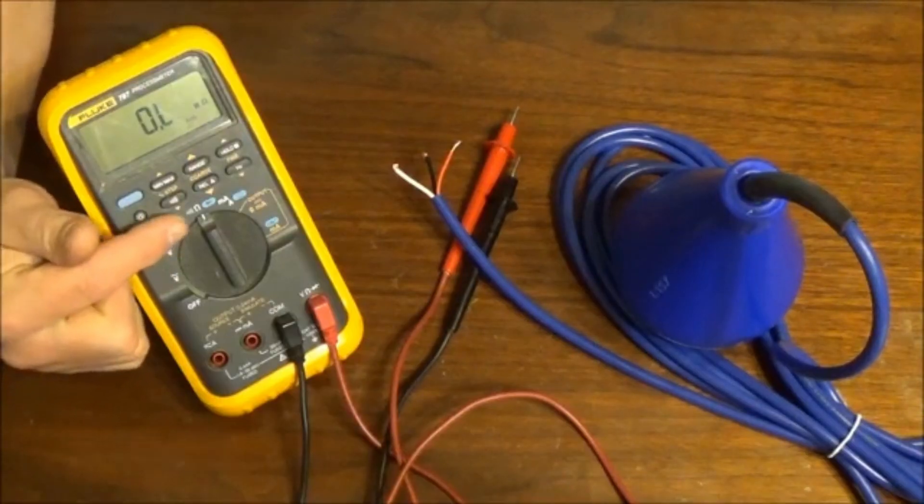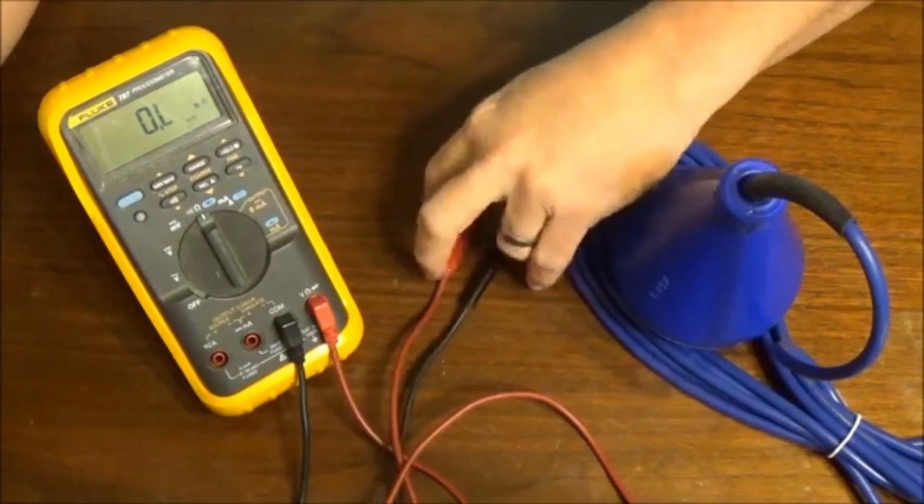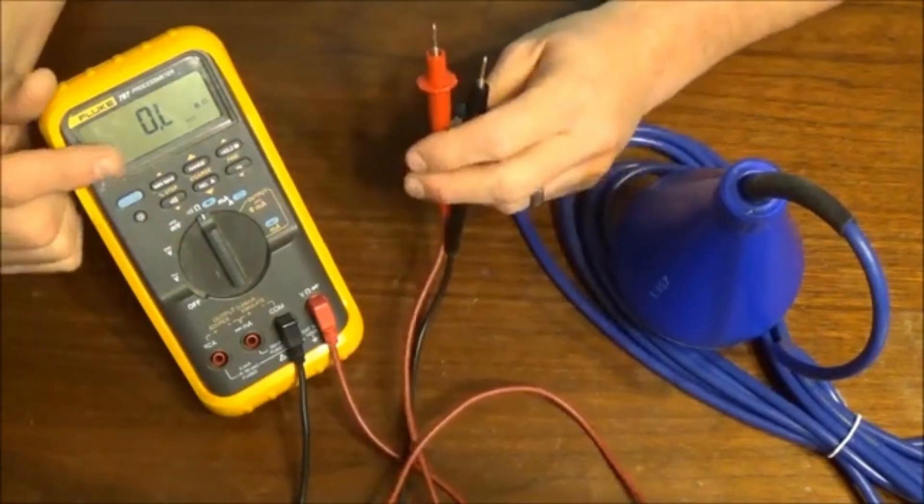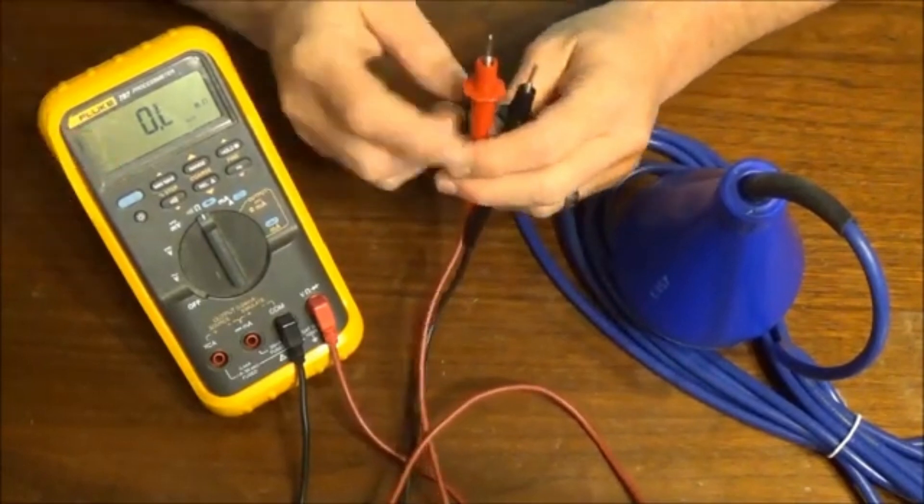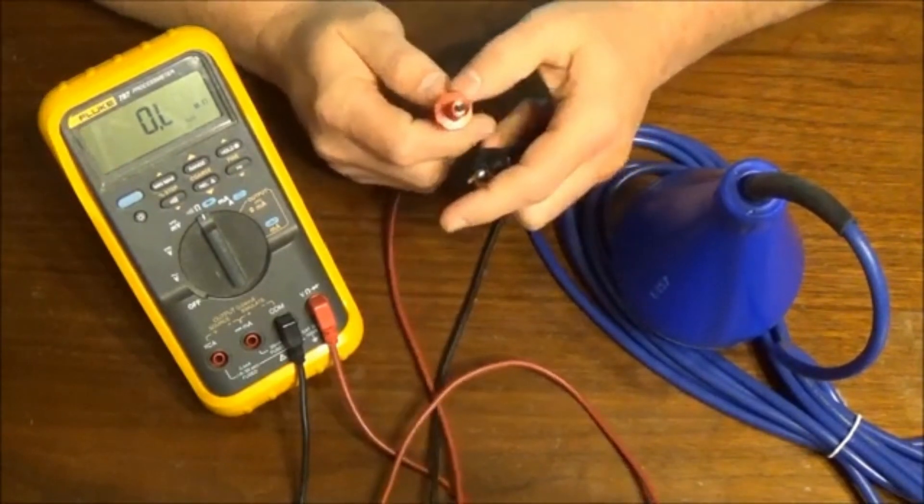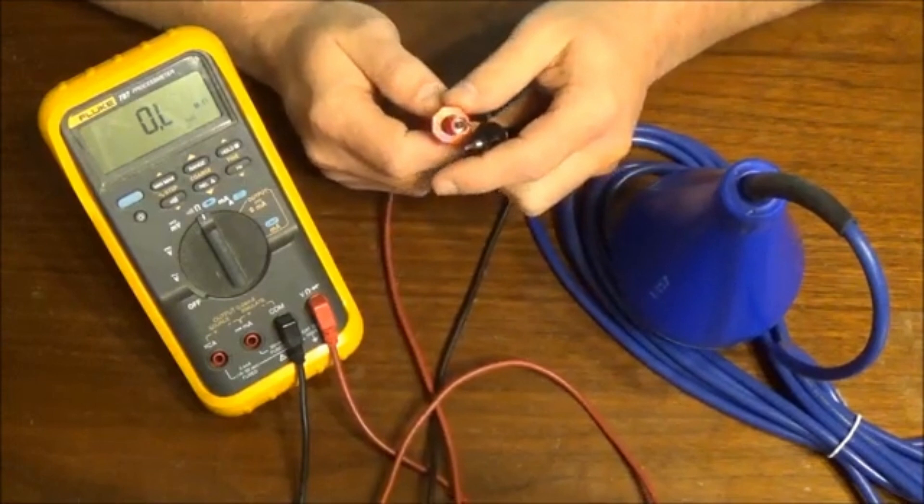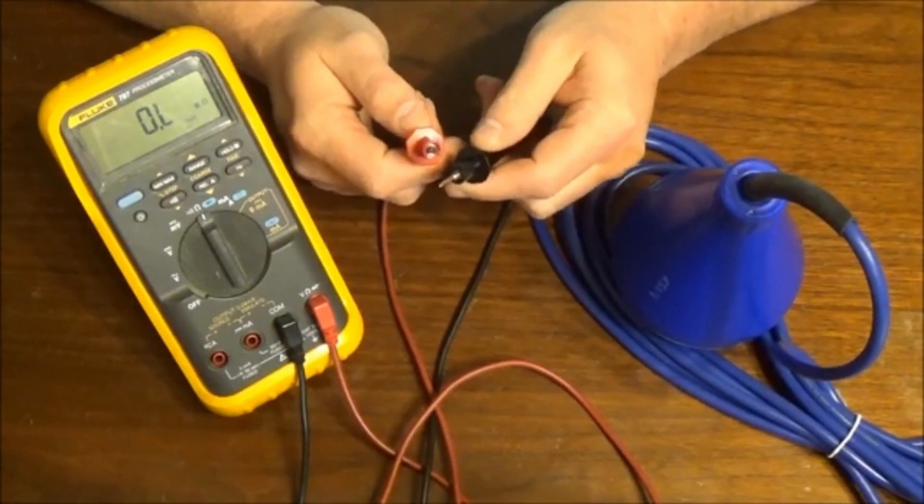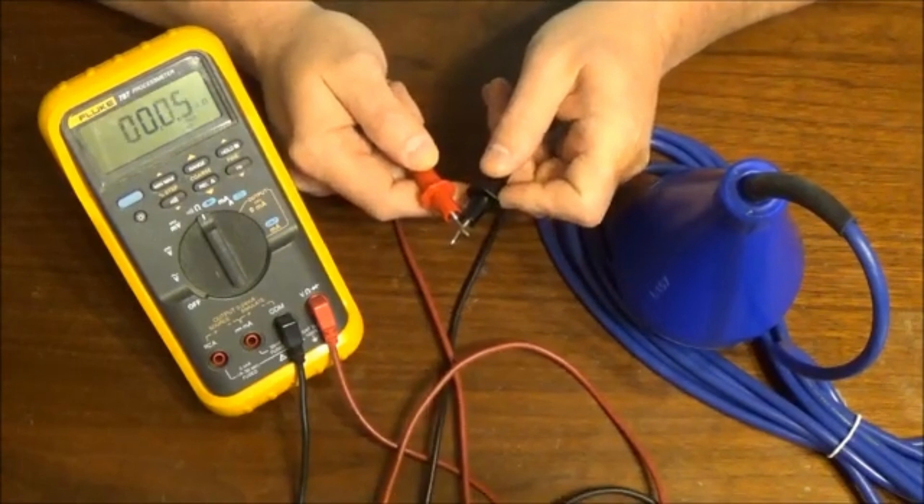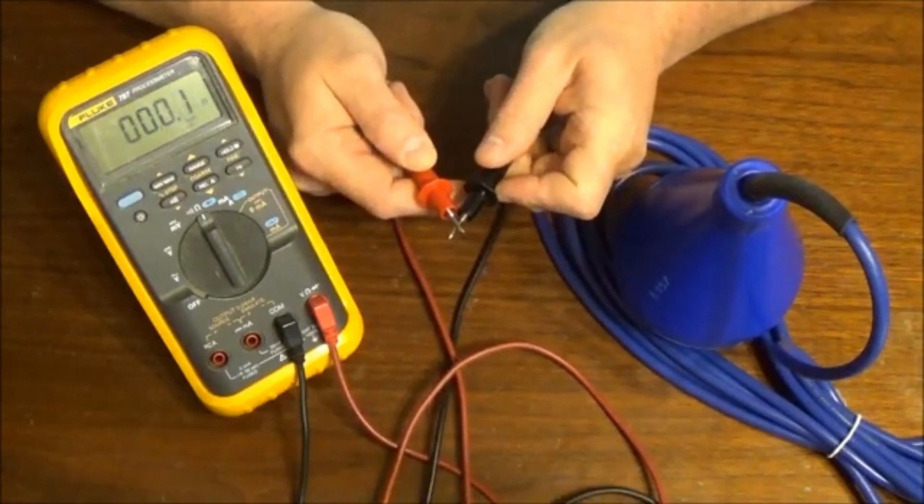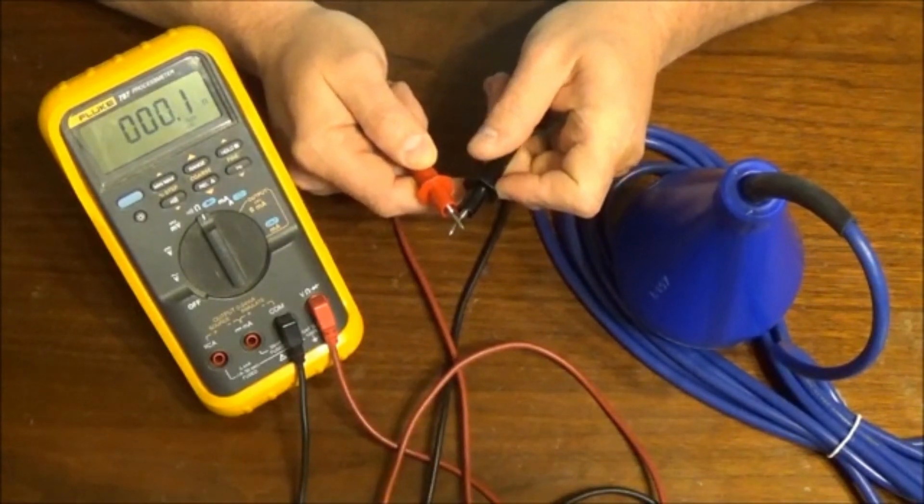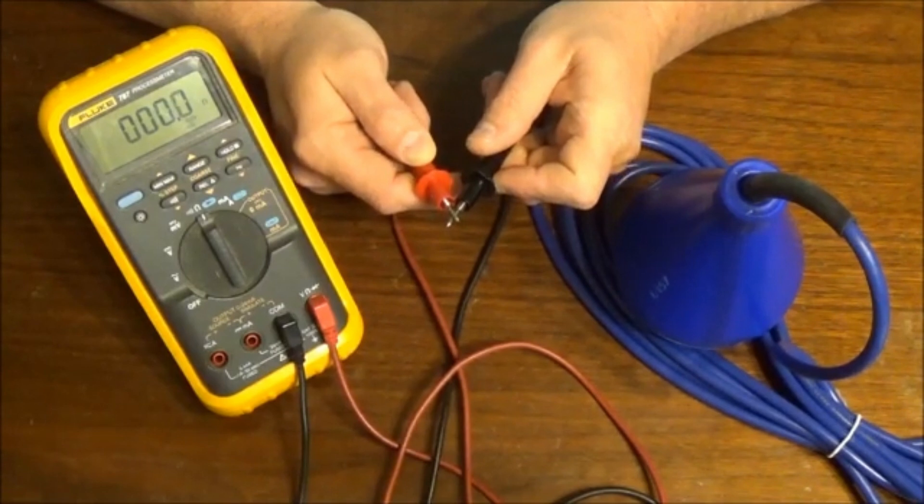What we do is we set the meter for resistance. And when you do that, you'll see the display says OL. I call that overload, meaning that there's more load than the meter can read. And if you short the leads together, you'll read a near perfect short as 00.00 or 00.1 on the meter.